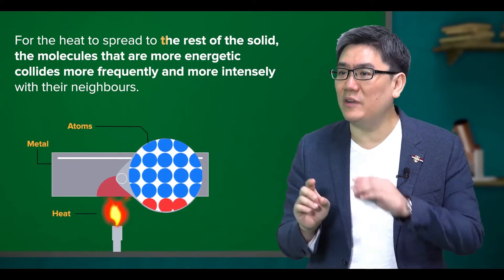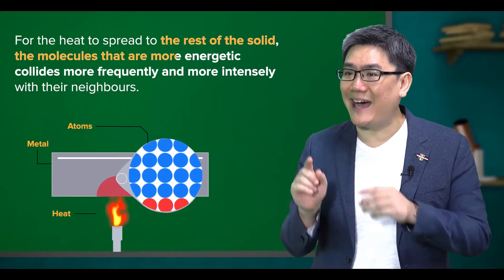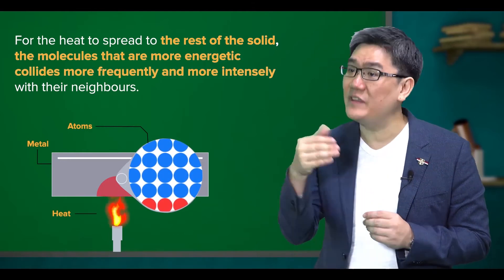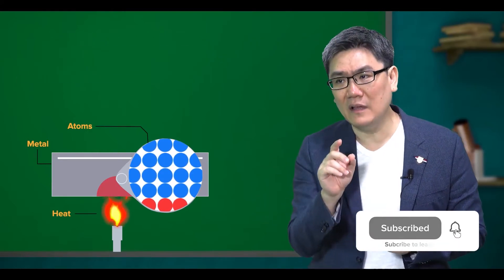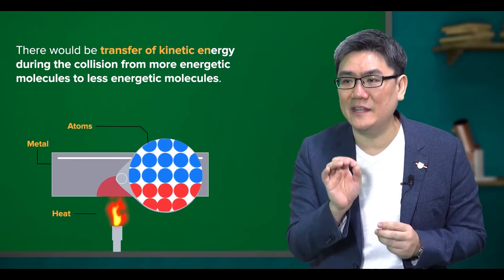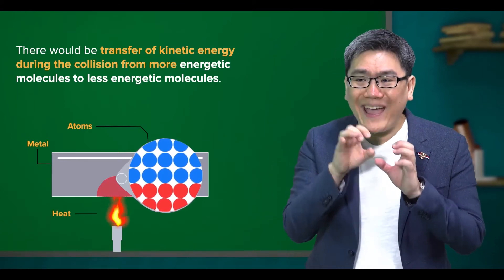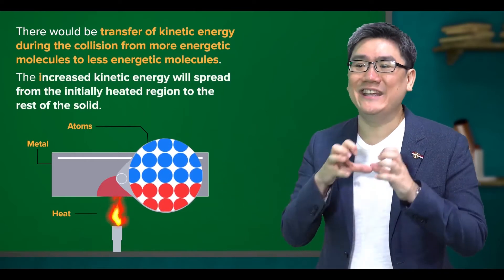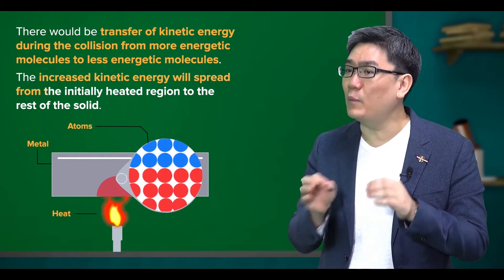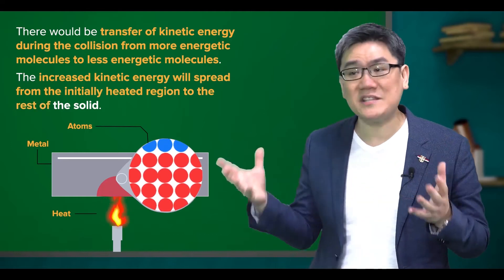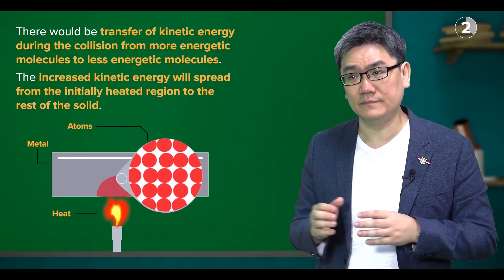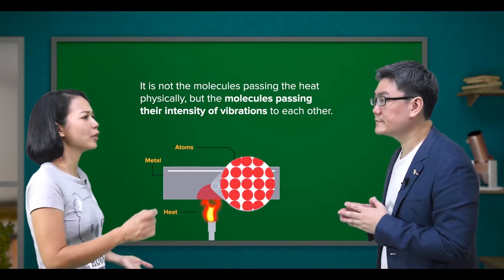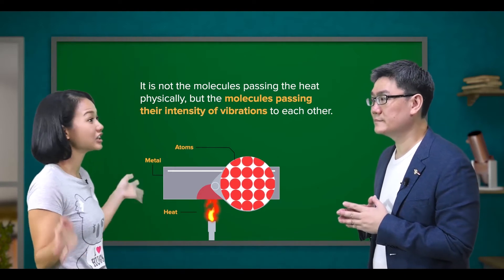So for the heat to spread to the rest of the solid, the molecules that are more energetic collide more frequently and more intensely with their neighbors. As a result, there would be transfer of kinetic energy during the collision from more energetic molecules to less energetic molecules. Over time, the increased kinetic energy will spread from the initially heated region to the rest of the solid. So it is not the molecules passing the heat physically, but the molecules passing their intensity of vibrations to each other.